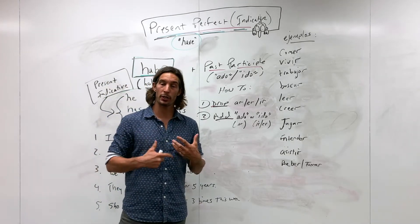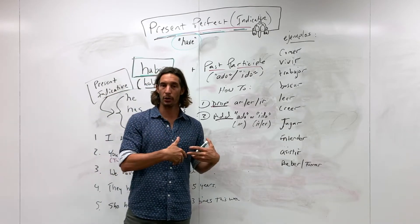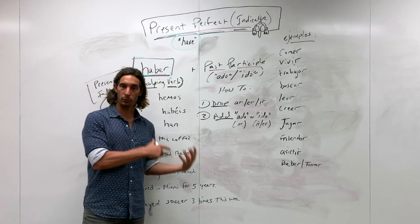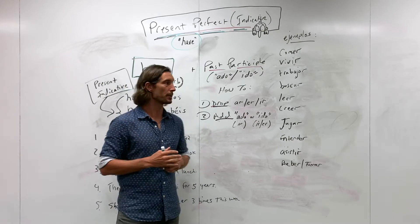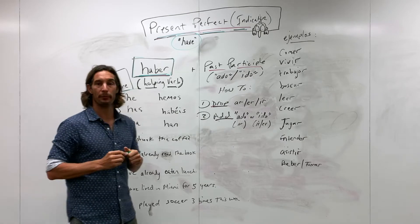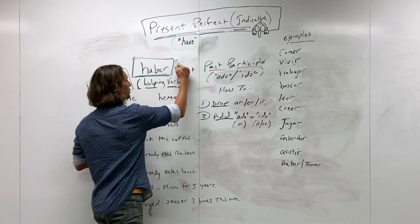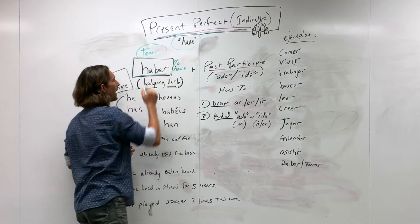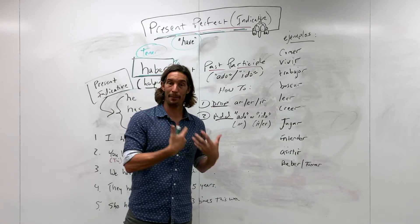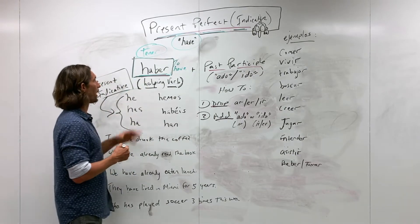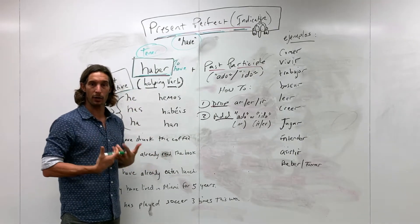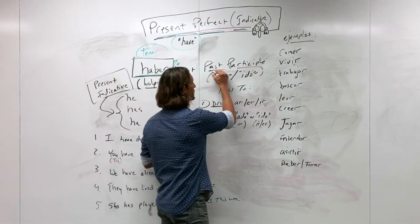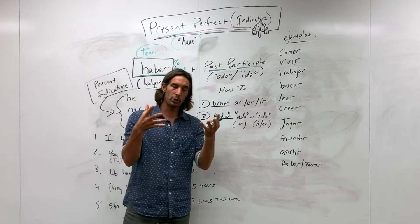With this being the first introduction, there are a number of things I want to walk through beyond just the conjugations. All perfect tenses — whether it's the present perfect indicative or the others — are going to use the verb 'haber' as a helping verb, which means 'to have.' I know some of you are thinking 'tener' means 'to have,' and it does, but 'haber' is the auxiliary verb used for perfect tenses.